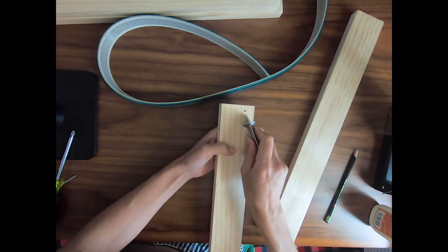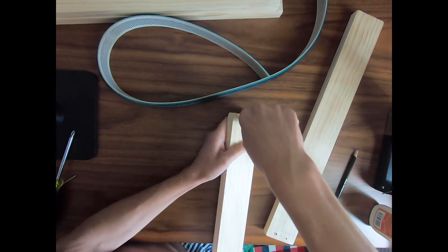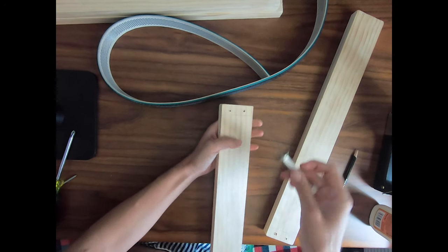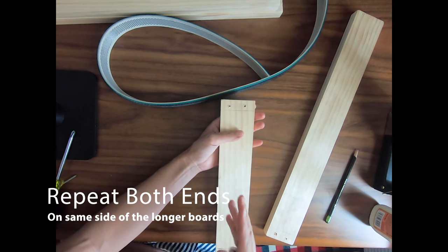You just screw it in a little bit just to start a hole and then you'll go over here, a little bit over, and do it again. You're going to want to do that on both of your long boards on both sides, the same side.